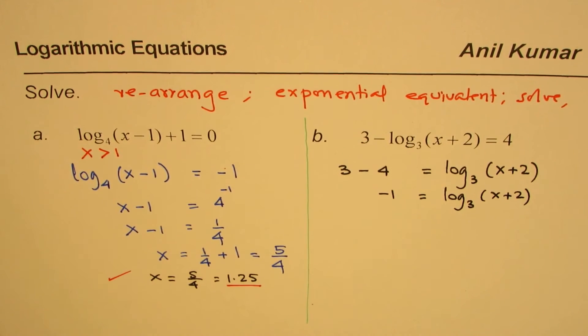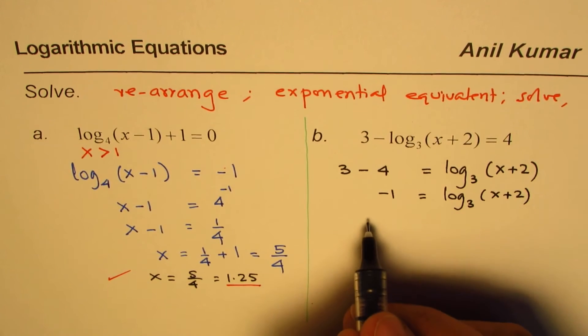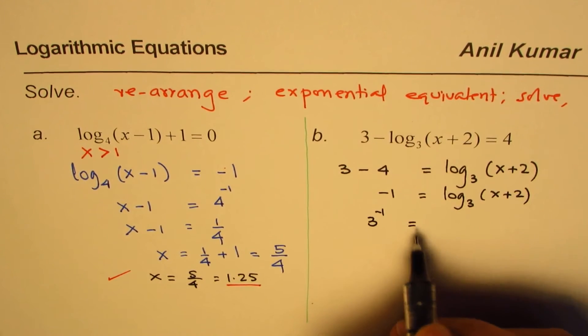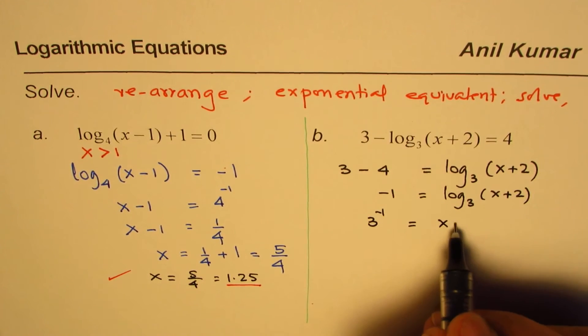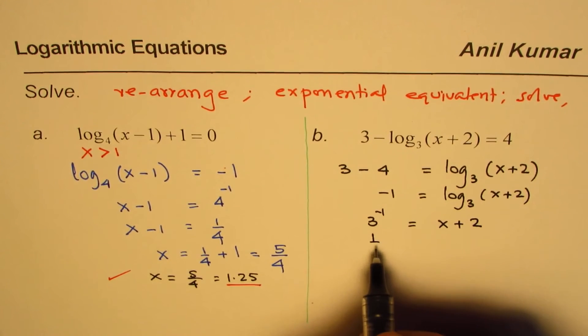So we can write 3 to the power of minus 1 equals to x plus 2, which is 1 over 3.